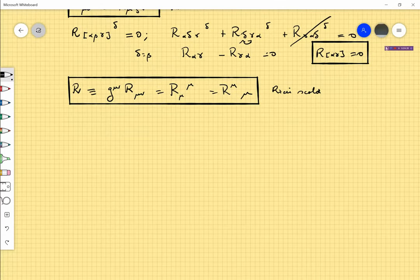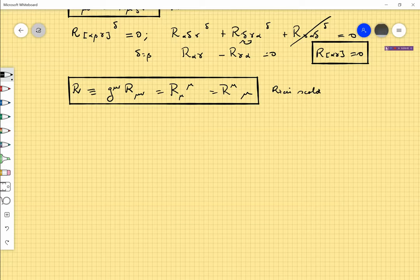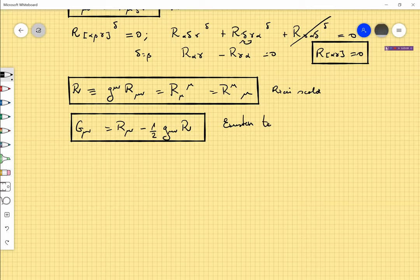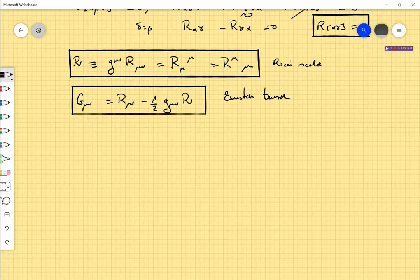Then if I have a Ricci tensor and Ricci scalar, I can construct the Einstein tensor, which is defined in this way. It is G_μν = R_μν minus a half of the metric times the Ricci scalar. So, why should we make this funny definition? Well, the motivation is the Bianchi identity that is satisfied by the Einstein tensor.